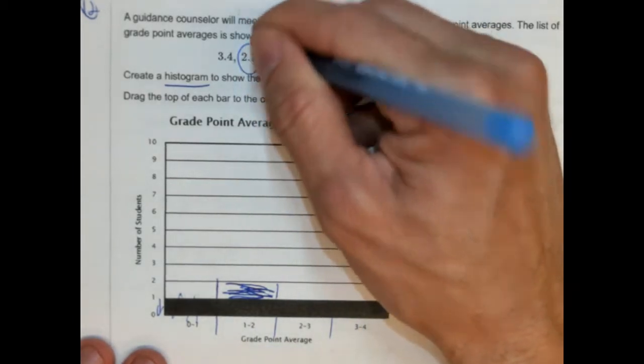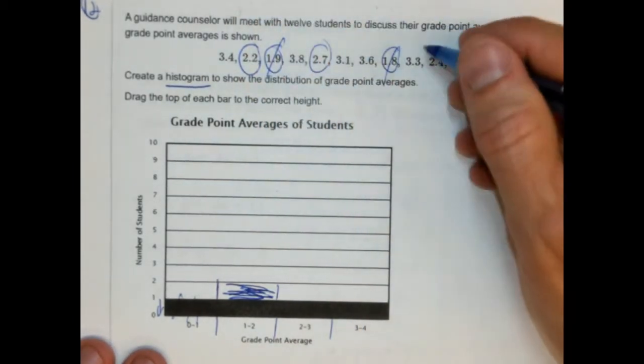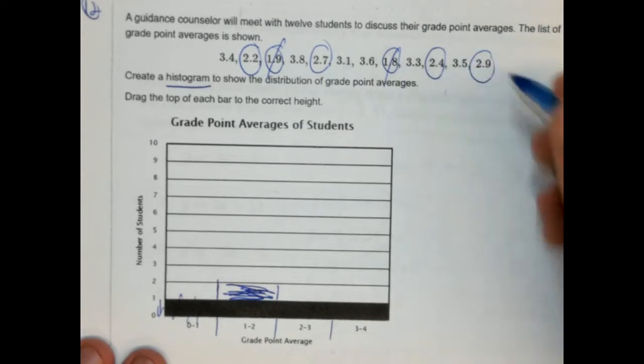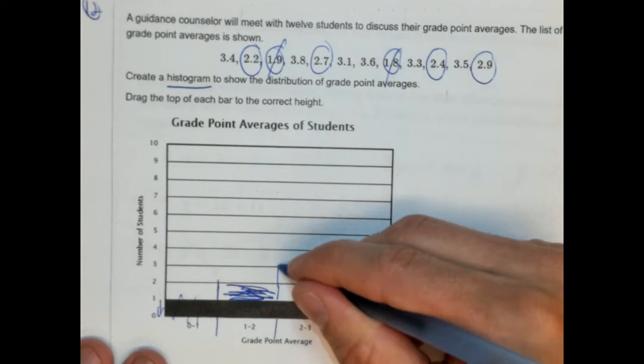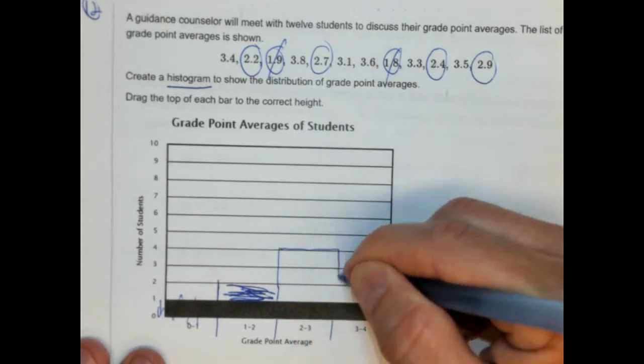All right, so two to three is one of them. There's another one, two, three, four. There's four of them. Double check. Yep. So we're going to go up four here. So this is going to go up to here. That's four.